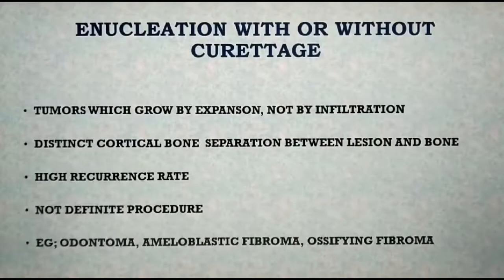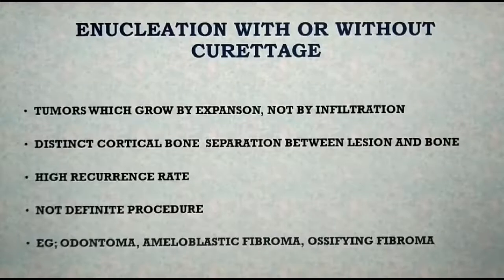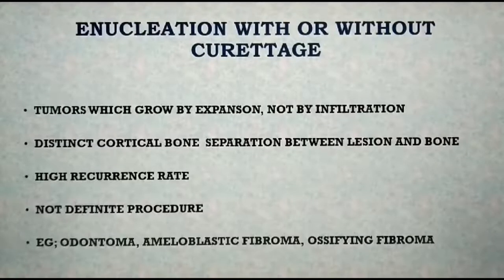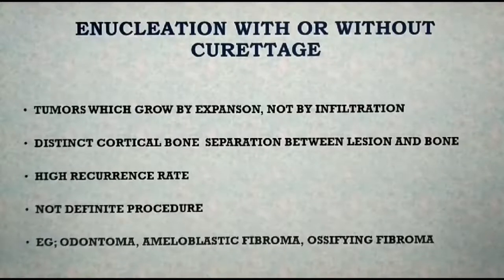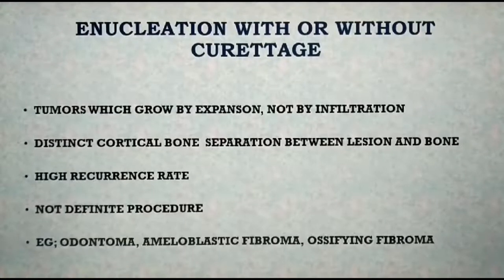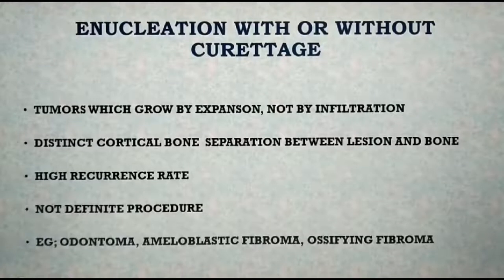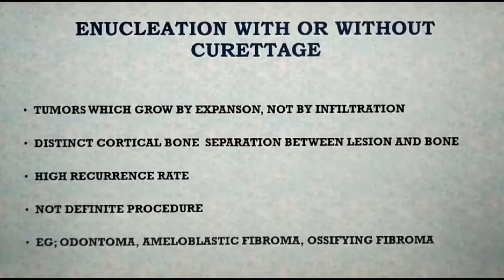The first among the surgical treatment modalities of jaw tumors is enucleation with or without curettage. Curettage is the removal of pathological tissues by vigorous scraping along the cavity walls or bone margins of the lesion. This procedure is indicated for tumors which tend to grow by expansion rather than infiltration of surrounding tissues. Lesions occurring in bone with a distinct separation between the lesion and the surrounding bone are excised by this procedure, as there is often a cortical margin of bone that differentiates the tumor or cyst from the bone. Enucleation is mainly used for well-encapsulated cystic lesions; however, it is not a definitive procedure and has a high recurrence rate.